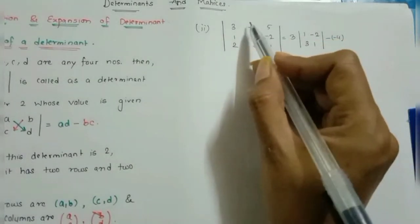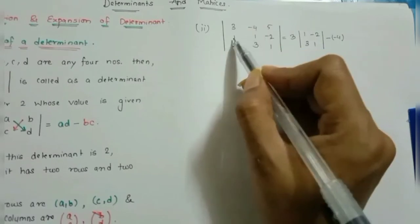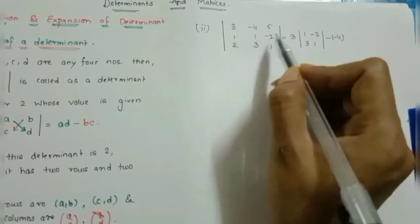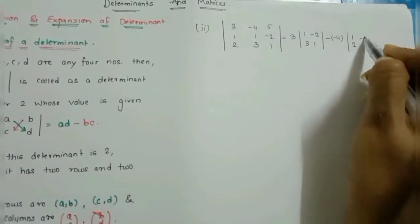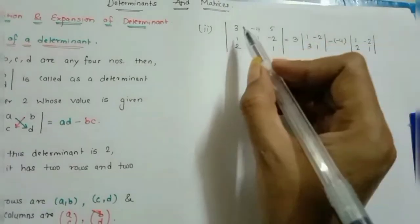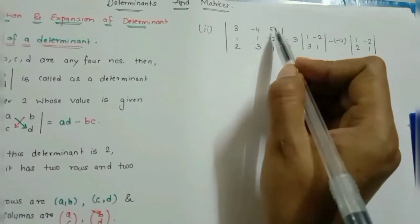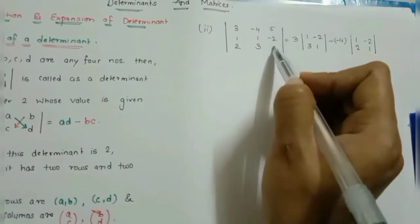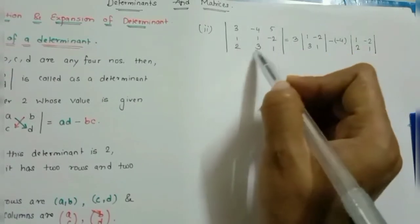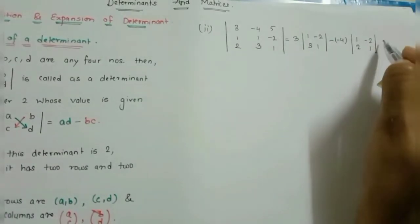Moving to the third term: this is a first-row, third-column element. We eliminate the first row and third column, leaving four elements: 1, 2, 1, 3. Before this term we put a plus sign. So if this element is 5 (negative), we write it in a bracket. Then the determinant symbol with elements 1, 2, 1, 3.